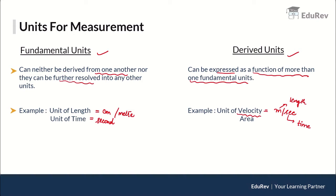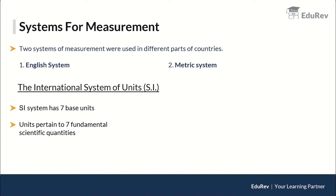So using both meter and second, we derive a new unit — velocity. Similarly, for area we write meter squared, which is derived by multiplying length by breadth. Since both length and breadth have the basic unit of meters, multiplying them gives a new derived unit for area.